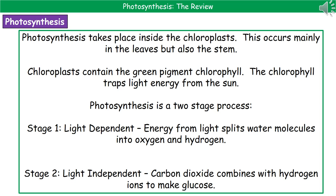Photosynthesis is a two-stage process. The first stage is the light-dependent stage — this is the one that needs light — where light is used to split water molecules into oxygen and hydrogen. So we take H₂O and split it into oxygen and hydrogen ions. Stage two is the light-independent stage, which doesn't need light energy. Here, carbon dioxide combines with the hydrogen ions to make glucose. Remember what happens in each stage.